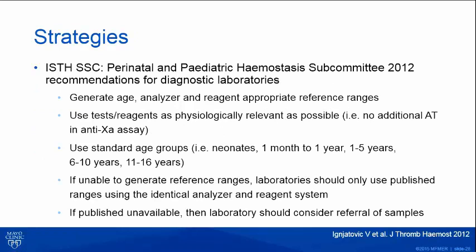In 2012, the ISTH-SSC Perinatal and Pediatric Hemostasis Subcommittee came up with recommendations — not evidence-based, but mainly expert opinion. They recommend that each laboratory should generate their own age-, analyzer-, and reagent-appropriate reference ranges; use tests and reagents that are as far as possible physiologically relevant, such as using anti-Xa assay without antithrombin supplementation; and use standard age groups for inter-laboratory comparison. If unable to generate their own ranges, laboratories should use published ranges for their analyzer-reagent combination, or refer samples to laboratories with their own pediatric reference ranges.